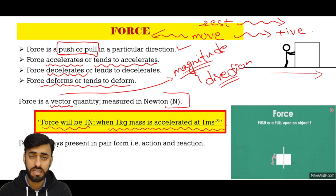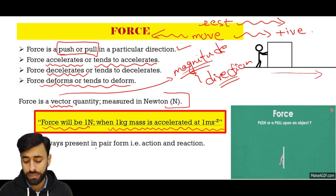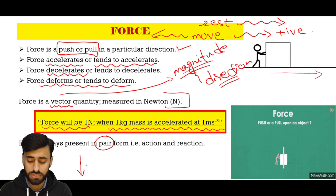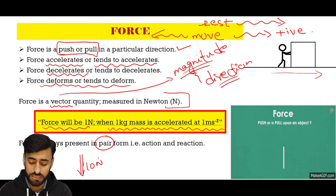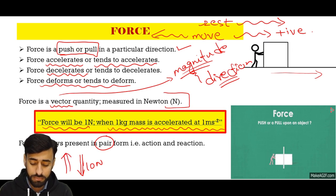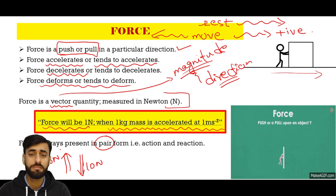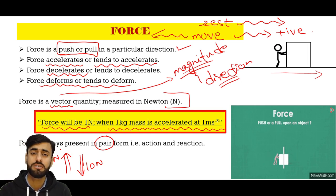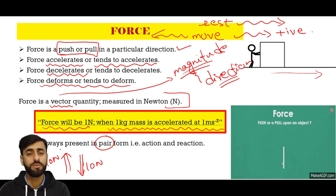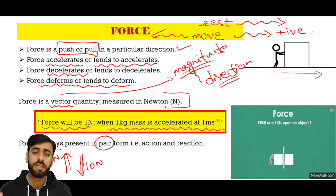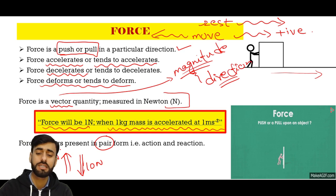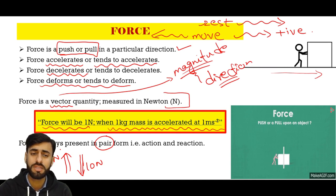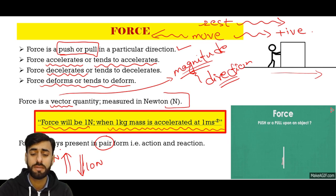Always remember, students, that force always occurs in pairs — in the form of two, in the form of a couple. That means if you exert a force of, say, 10 Newtons on something, that same object will exert 10 Newtons back on your hand. For example, if you hit a cricket ball against a wall, the ball returns at almost the same speed because the wall exerts an equal force back on the ball.